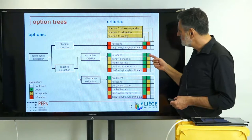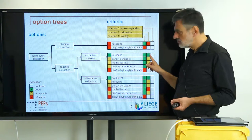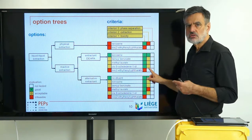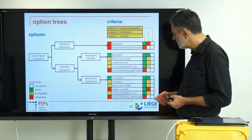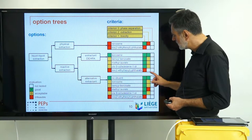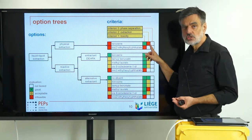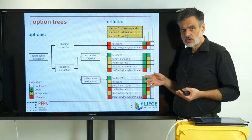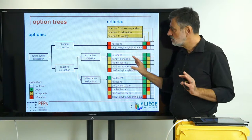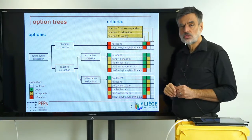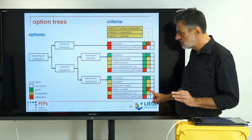Including equilibrium results in the option tree: kerosene with DIPA gets a green box — it works very well. For the alternative extractant the equilibrium is slightly worse but still acceptable. For physical extraction the partition coefficient is so low it doesn't work on a technical scale — it's red, meaning the entire physical extraction branch is now eliminated. A second red option can also be eliminated.